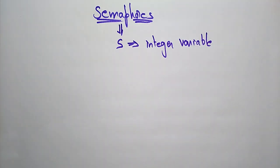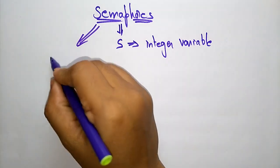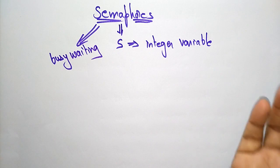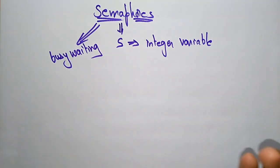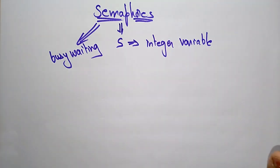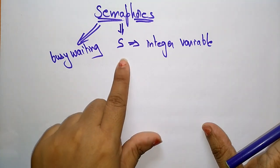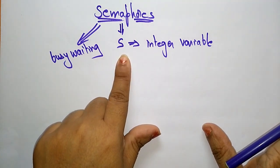Why are we using this integer variable and why are we calling this a semaphore? A semaphore is a synchronization tool that does not require busy waiting. It does not want to maintain busy waiting. Whatever process wants to enter into the critical section has to be executed. So a semaphore is a synchronization tool that does not require busy waiting, and we take S as the integer variable used for the semaphore.